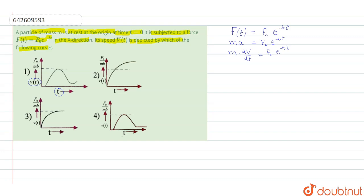Taking dt to one side and M to the other side, we get the value as dV = (F0 / M) · e^(−Bt) · dt. This is the equation we have. Now, integrating both sides, we get the values.